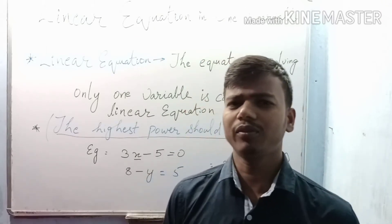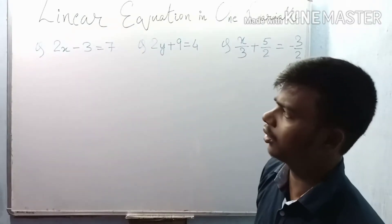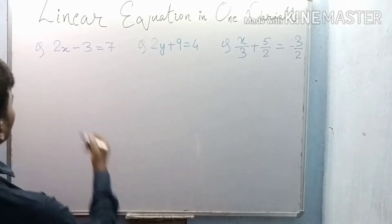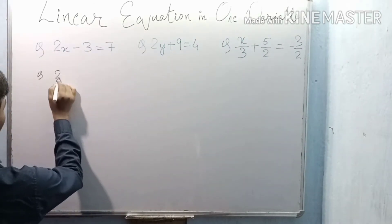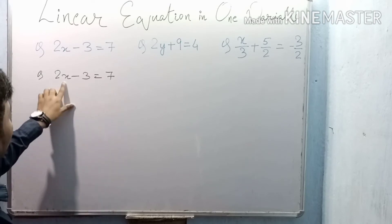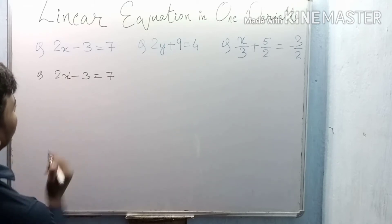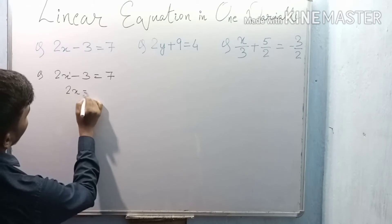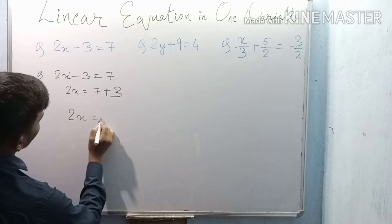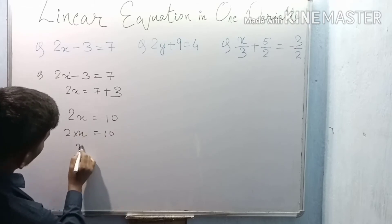Now we will discuss some very easy NCERT questions on linear equations in one variable. The first question is 2x minus 3 equals 7. We can see it has only one variable and the power is 1, so it is a linear equation. To solve, we separate the variable and constant: 2x equals 7 plus 3, so 2x equals 10, therefore x equals 10 divided by 2, which is 5.